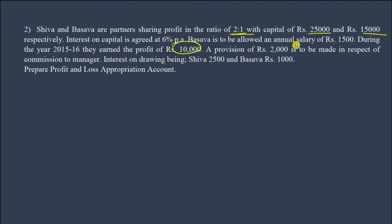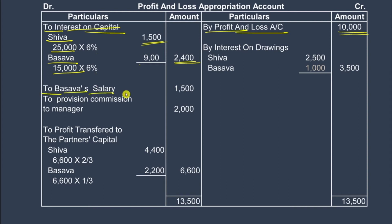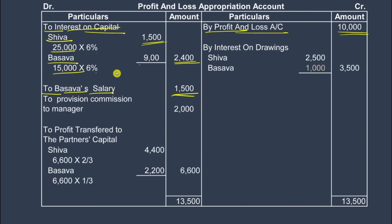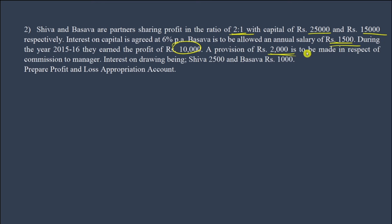Baswa is allowed an annual salary of 1,500 rupees. During the year 2015-16, they earned a profit of 10,000 rupees. A provision of 2,000 rupees is to be made in respect of commission to the manager. So commission charged is 2,000 rupees.